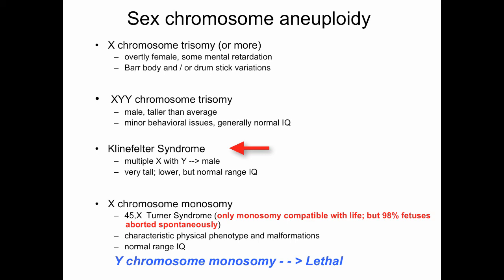Klinefelter individuals have multiple X chromosomes but with a Y chromosome. They are very tall and may have a lower but normal IQ range. We have to be careful because people used to talk about XYY and XXY individuals being prone to criminal behavior. This was postulated because early studies looked at individuals in prison. When studies were done in the general population, no differences were found, so we have to be careful with how data is interpreted.